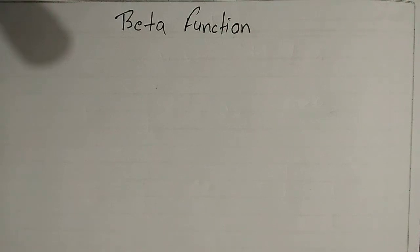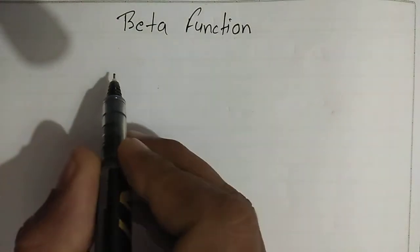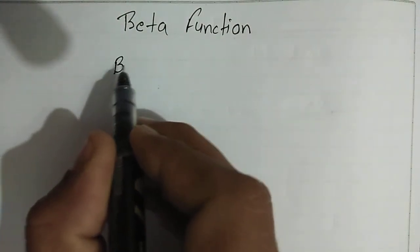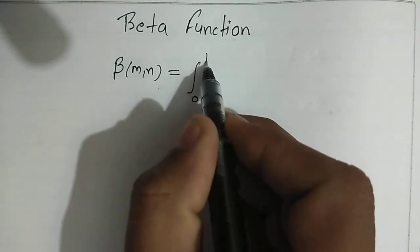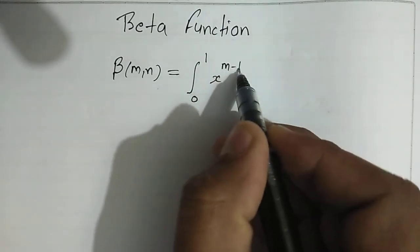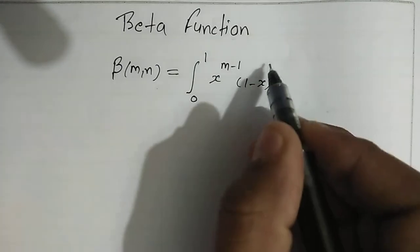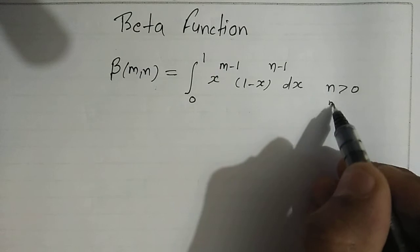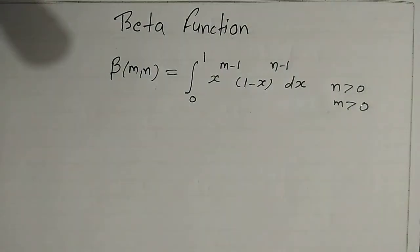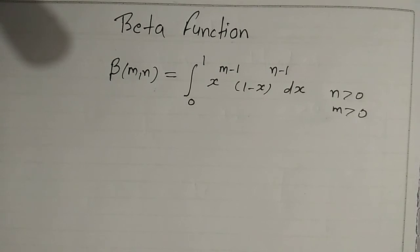Hello, welcome all of you to my YouTube channel Rudra Study Circle. In this video I am going to explain the beta function and its properties. First, let us see what the beta function is. We can define beta(m, n) equal to the integral from 0 to 1 of x^(m-1) times (1-x)^(n-1) dx, where m and n are positive.